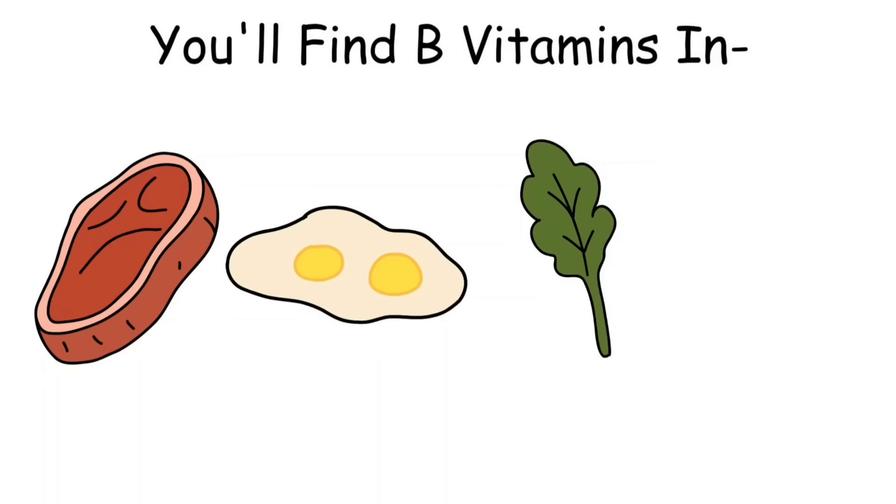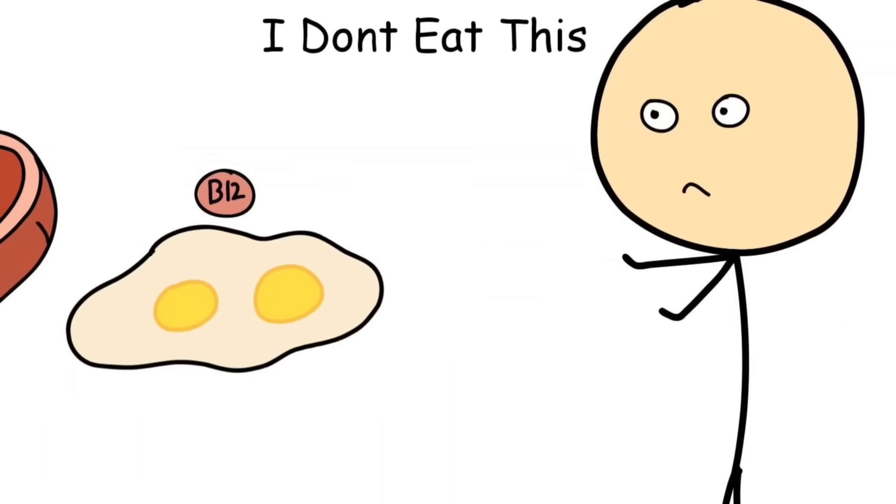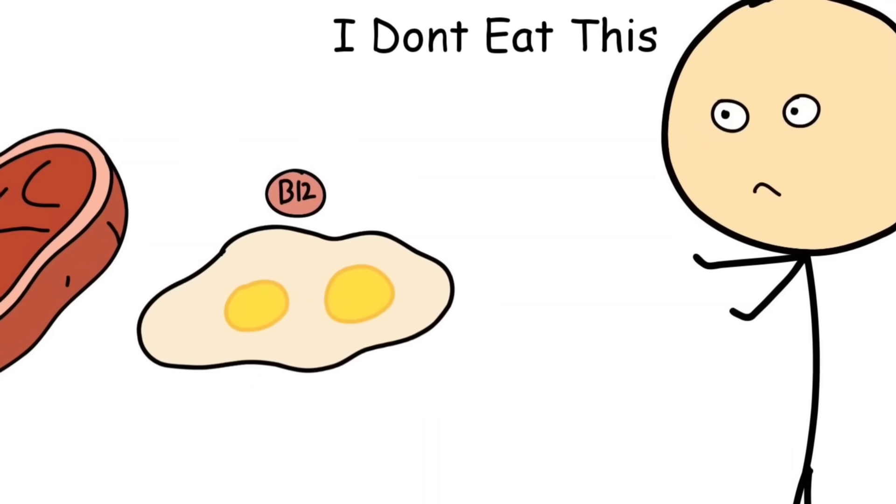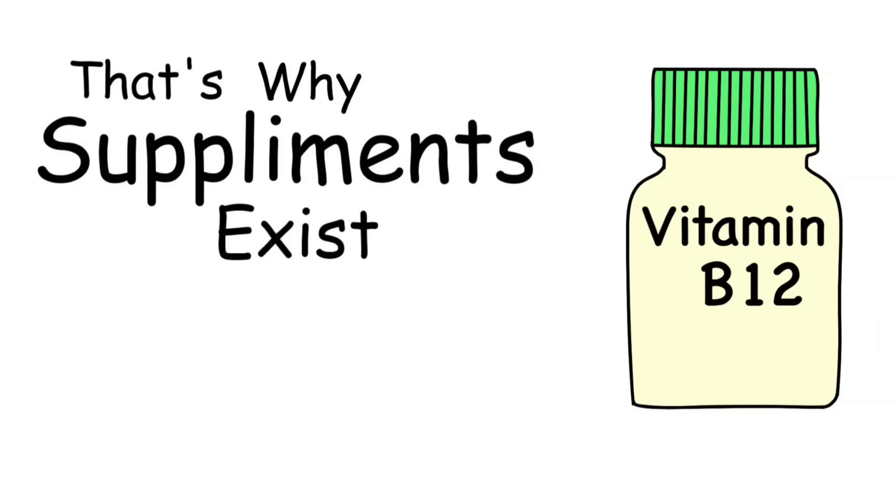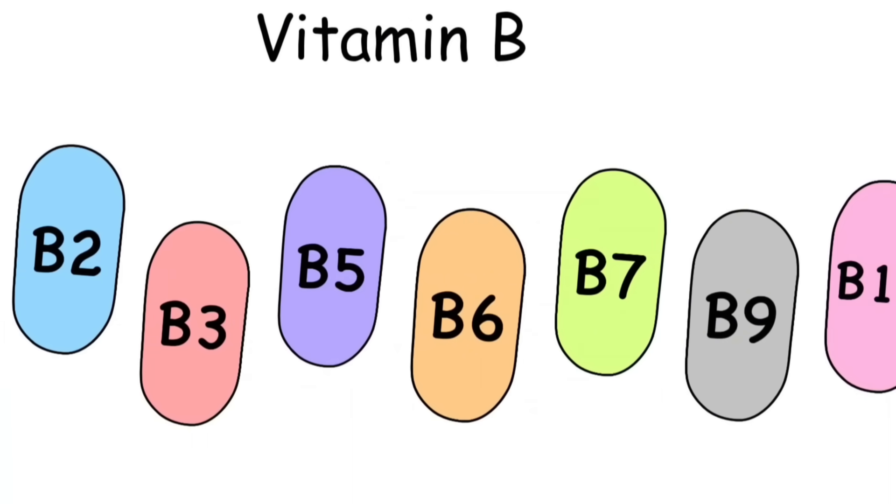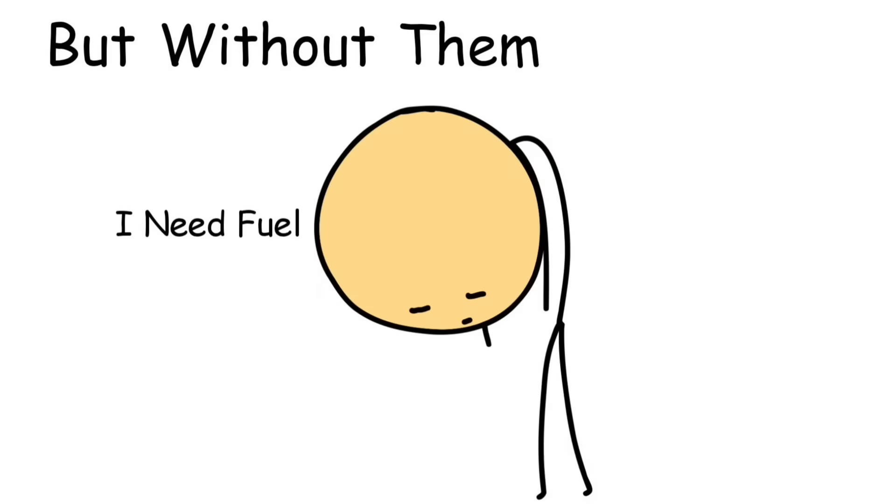You'll find B vitamins in meat, eggs, leafy greens, and grains. Vegans especially struggle with B12 since it mostly comes from animal products. That's why supplements exist. The B family doesn't get as much spotlight as vitamin C or D, but without them, your body basically stalls like a car with no fuel.